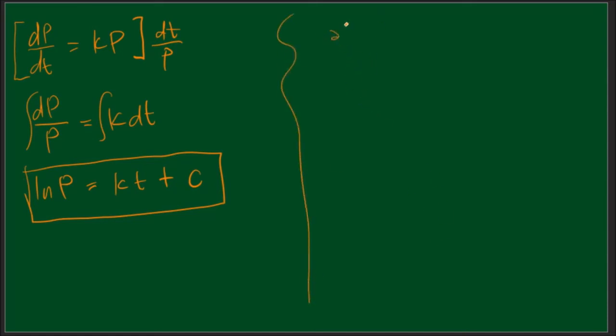So at a certain time, say time 0, the population is 100. Then at time 3 years, the population is 1,000. So at what time will the population be 1,500?